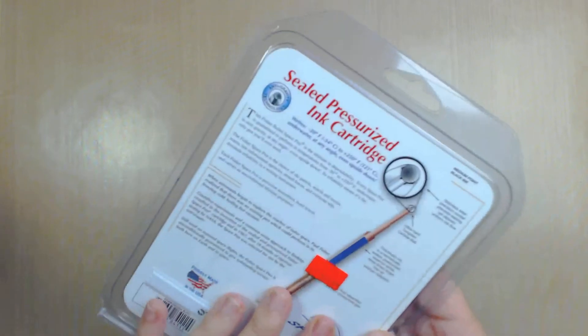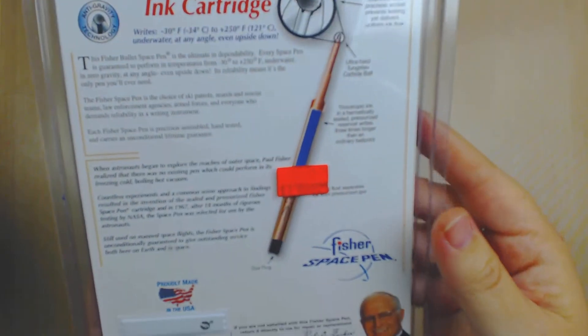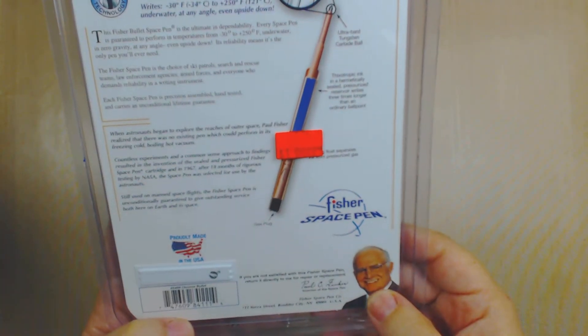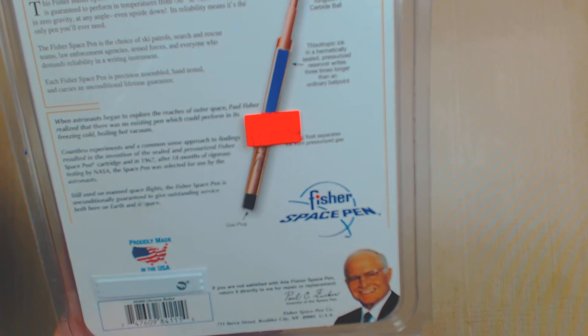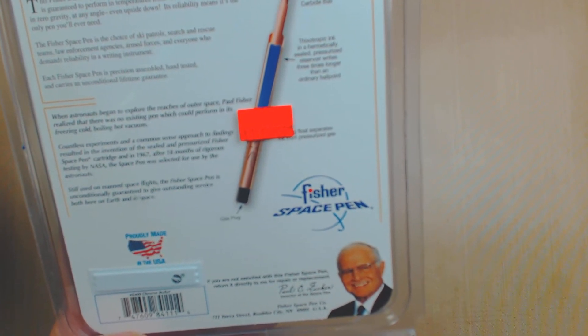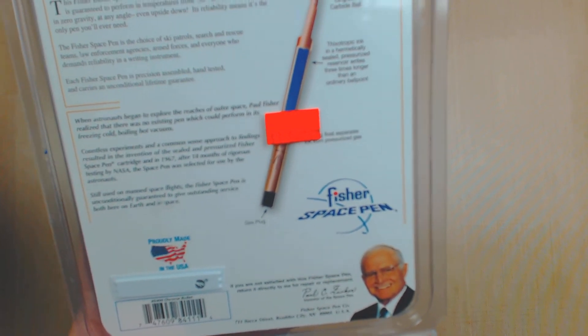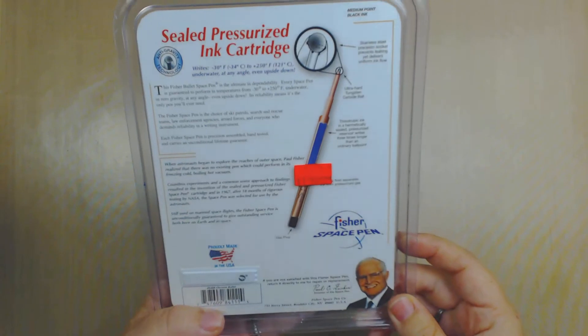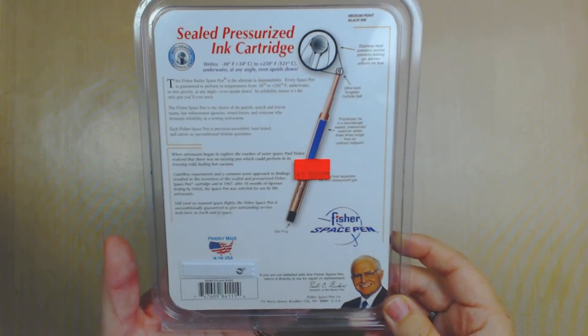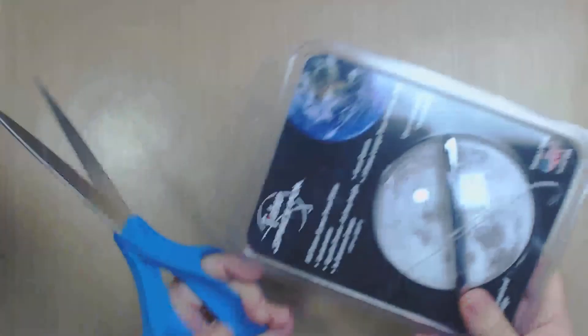The pen, let's open it. But another thing that I want to tell you about is that the inventor of the Space Pen was Paul Fisher. Paul Fisher passed away in 2006. He passed away and his son took over the company and kept on going, doing business.